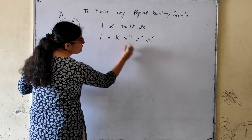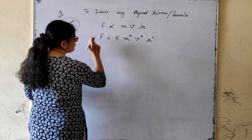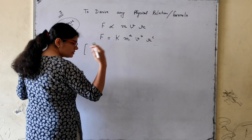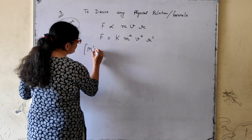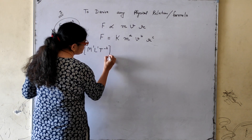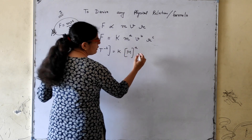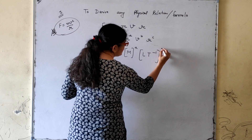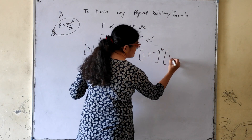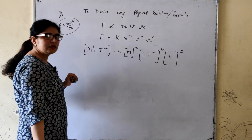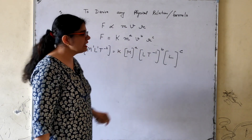The next step is to write down the dimensional formula for all physical quantities. Constants have no dimension. For force, the dimensional formula is M¹L¹T⁻². Mass has dimension M. Velocity has dimension LT⁻¹. And r is radius, which is a length, so its dimension is L.